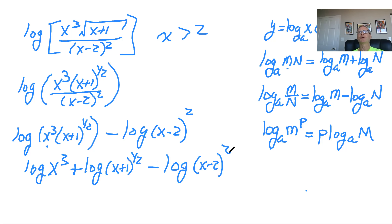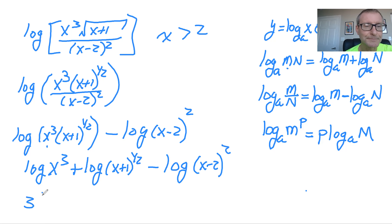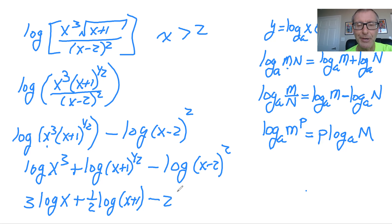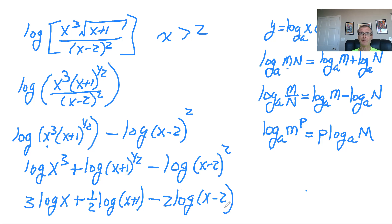The last step when expanding is to apply the power rule. We have three exponents, one in each log: bring out the 3 from the first, bring out the one-half from the second — it's nice that you no longer have a square root inside a log — and bring out the 2 from the third. This example implements every single one of the three properties introduced in this section.